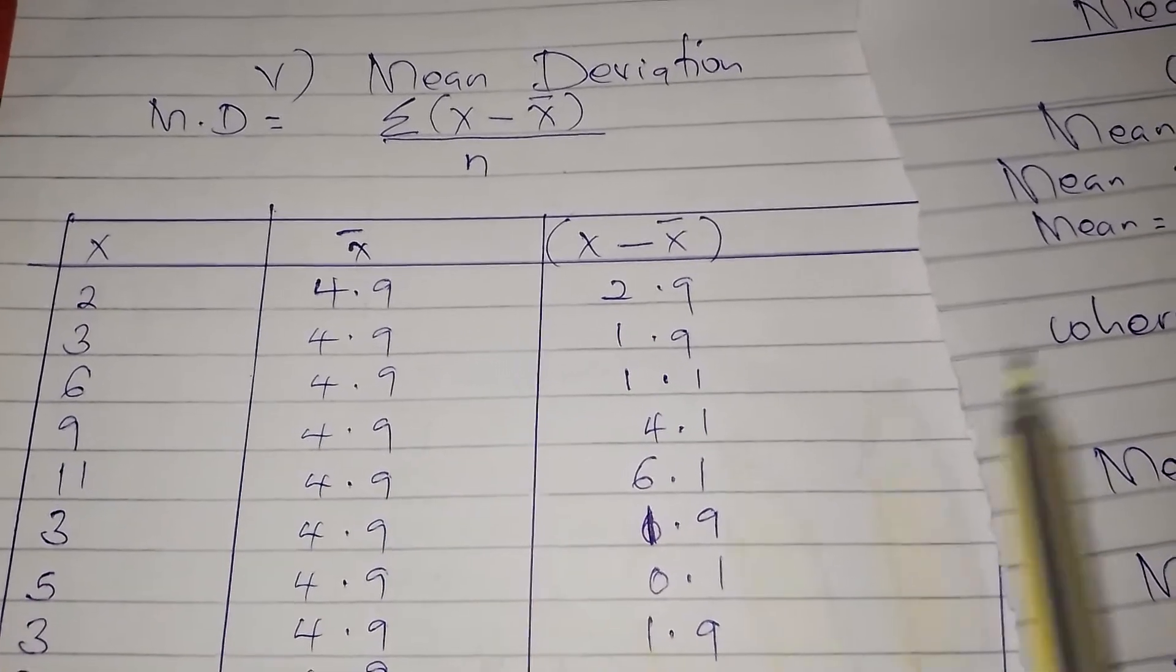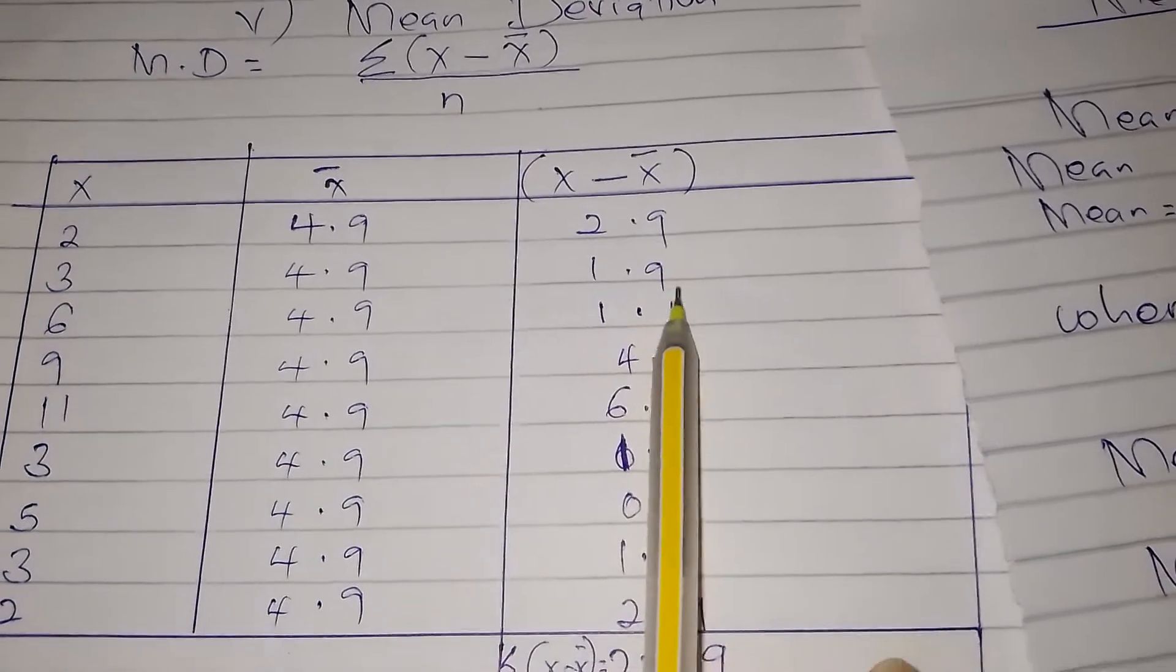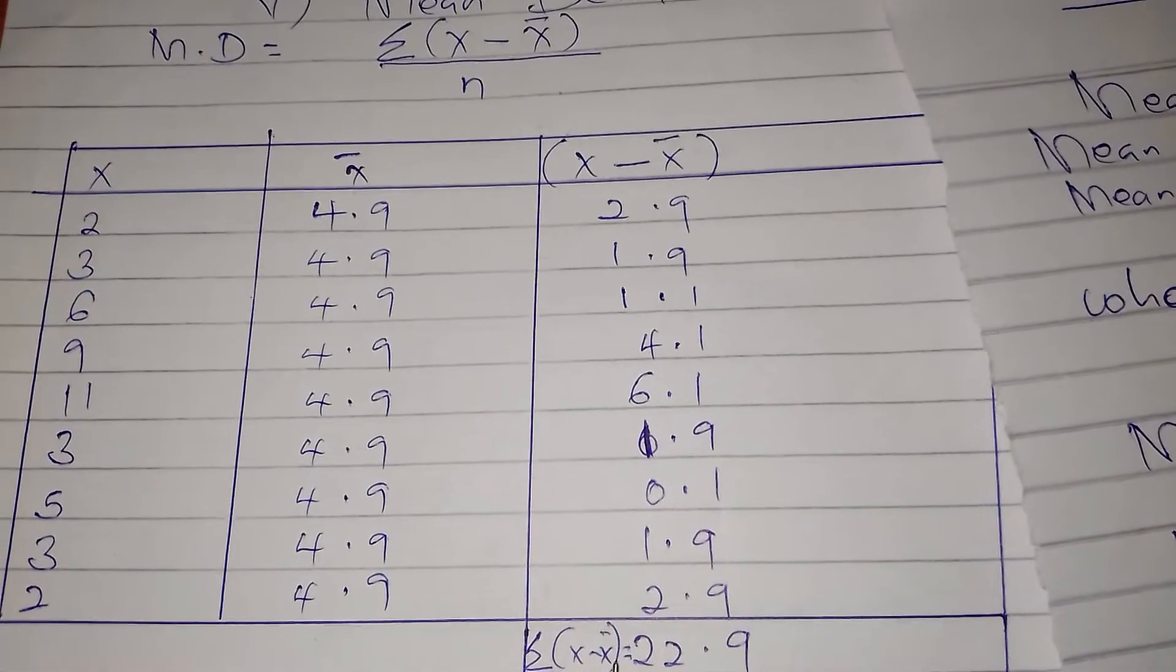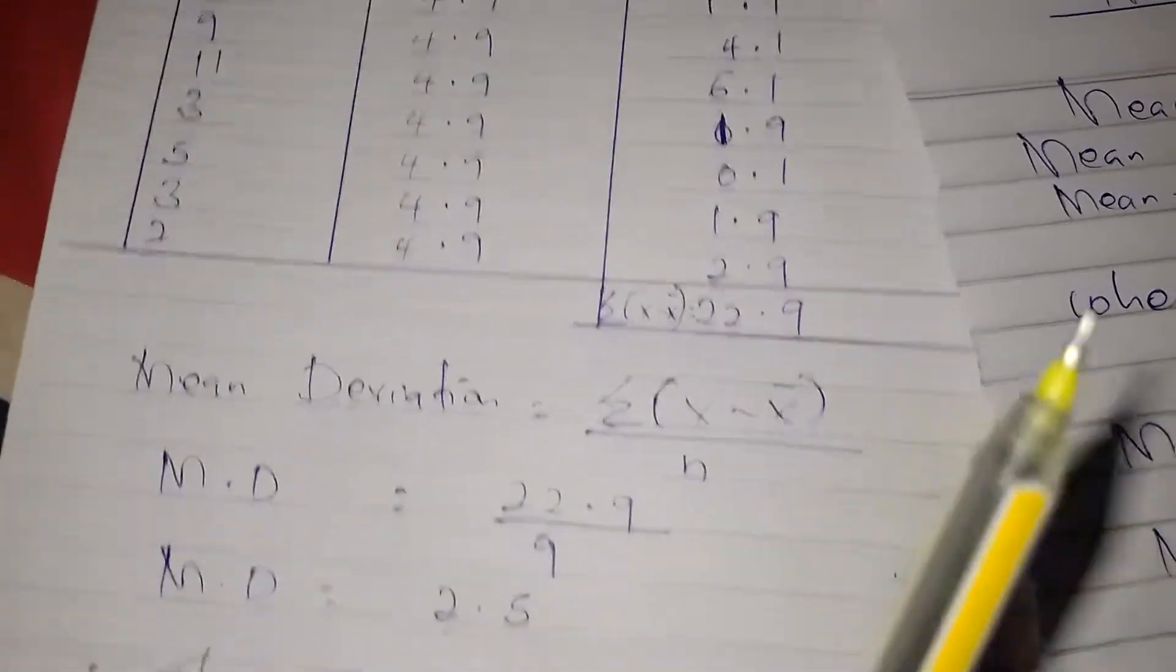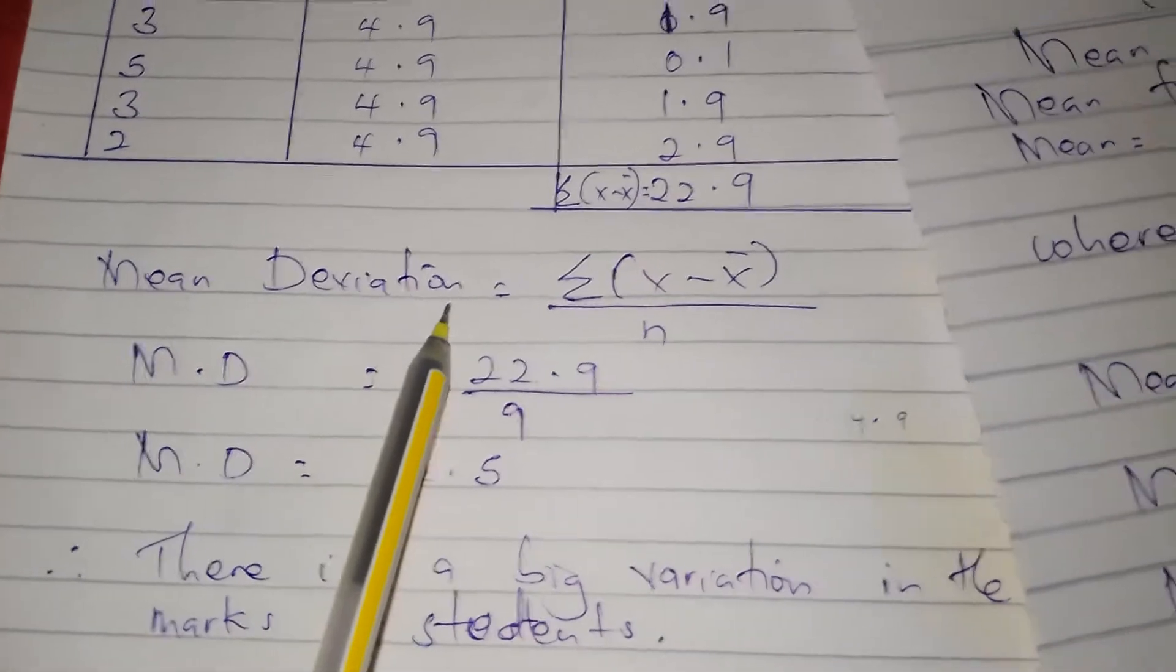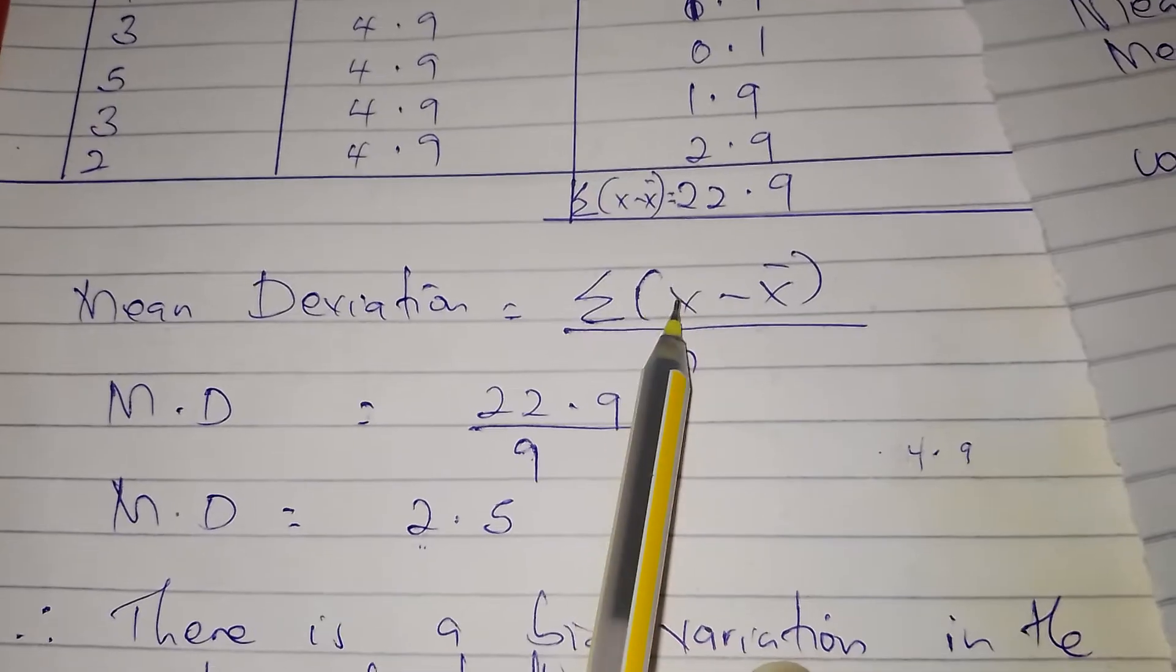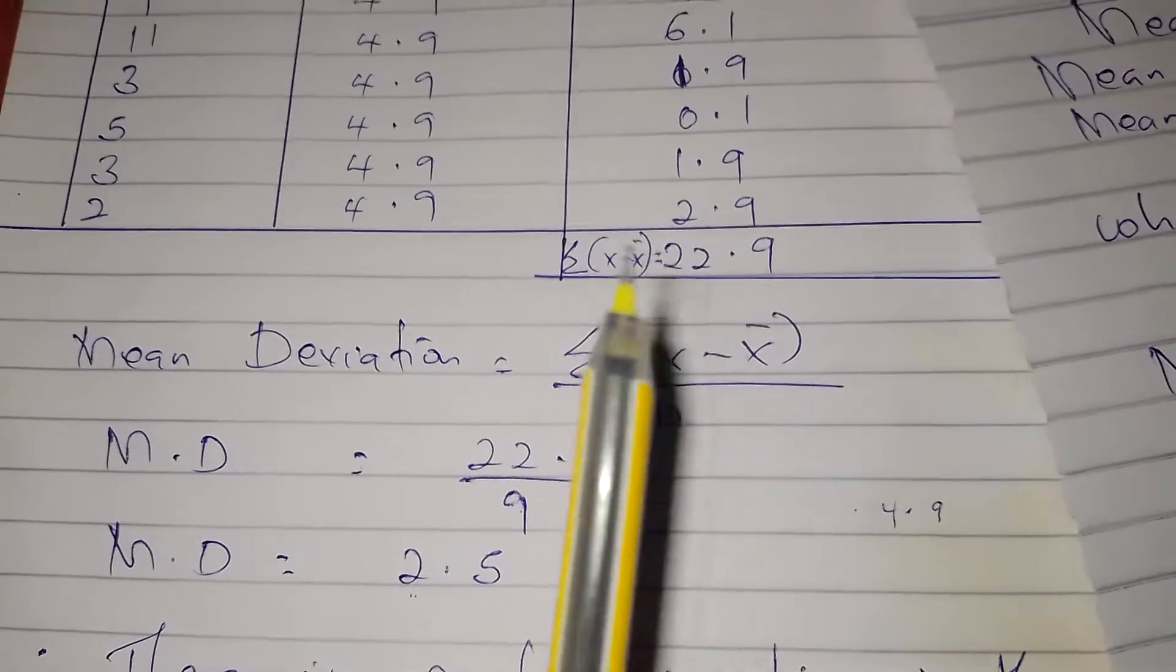After that we get the summation of all the figures, summation X minus X bar, which is 22.9. So we come here and substitute in our formula. We said mean deviation is summation X minus X bar out of n. N is the number of observations.